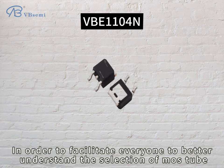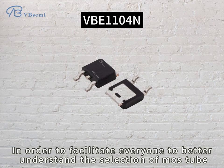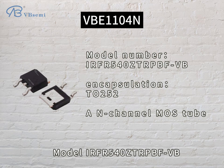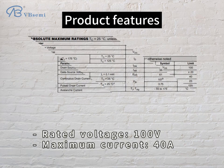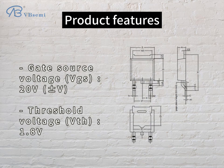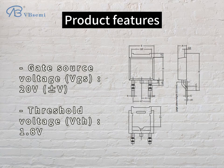In order to facilitate everyone to better understand the selection of MOSFETs, today we introduce an N-channel MOSFET product to you. Model R4540ZTRPBFVB. Product features: rated voltage 100V, maximum current 48A, gate-source voltage VGS 20V, threshold voltage VTH 1.8V.